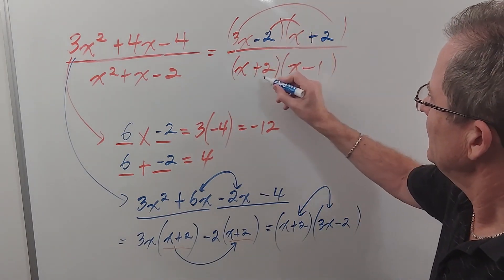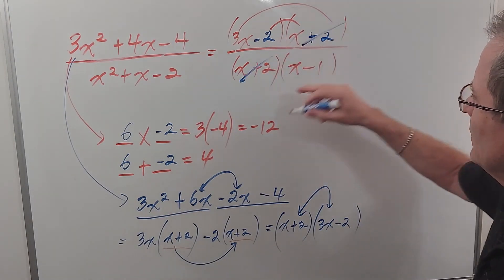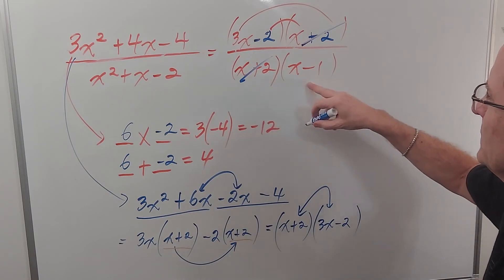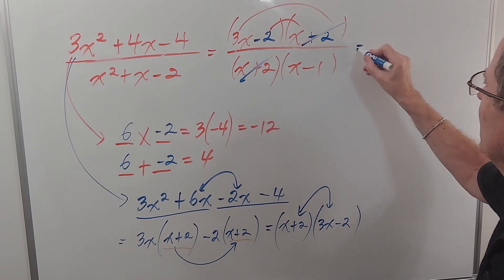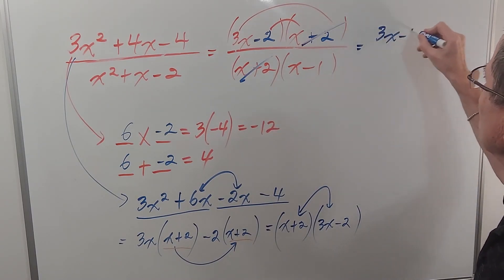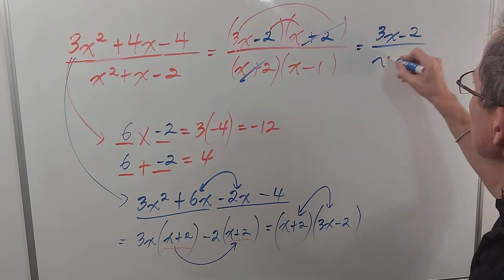And then you see that the x plus 2s cancel as long as x is not negative 2 and as long as x is not equal to 1. So the final answer is 3x minus 2 over x minus 1.